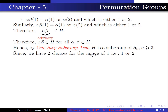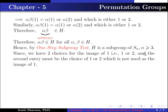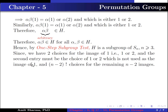Since we have two choices for the image of 1, that is 1 or 2, and the second entry must be the choice of 1 or 2 which is not used as the image of 1, and n-2 factorial choices are remaining for the n-2 images. Therefore, the order of H is 2 times (n-2) factorial.